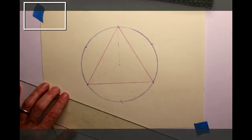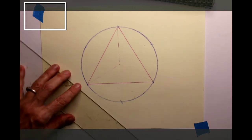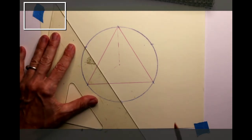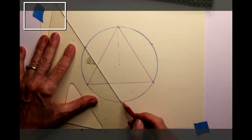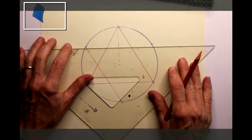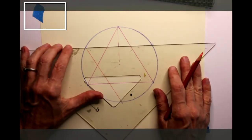And now I'll draw the other equilateral triangle to make a six-pointed star.